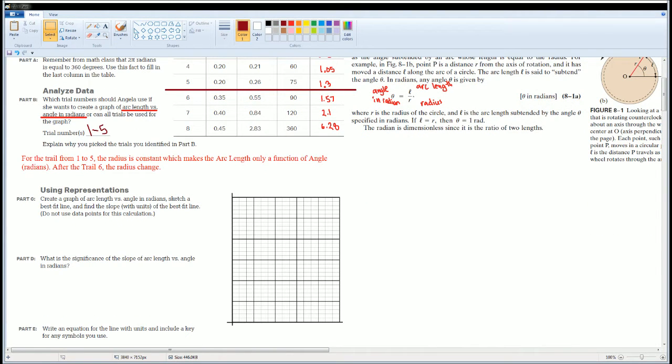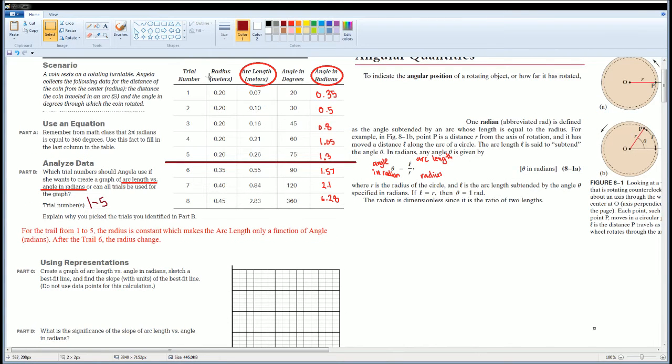I said that for trials one through five, the radius is constant, which makes the arc length only a function of the angle in radians. After the sixth trial, the radius changes, therefore you can't use those.